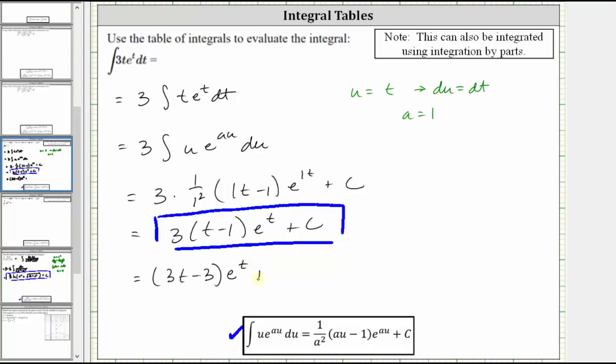Distributing e to the t now, we have three t e to the t minus three e to the t plus c.